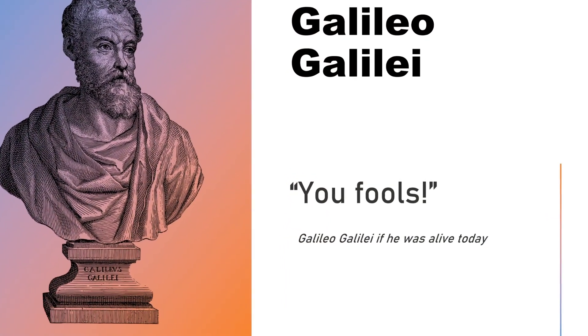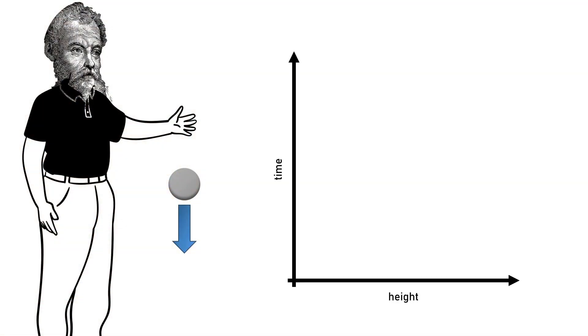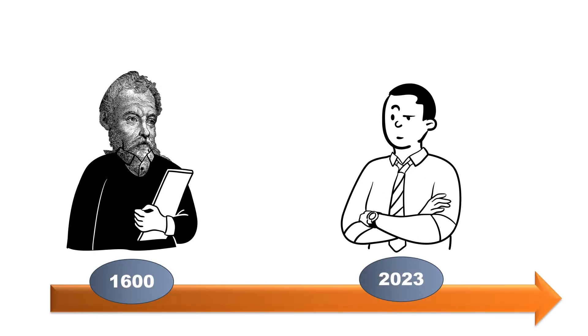And that's also the reason why one of the greatest scientists of all time would probably laugh at us today, because that's no progress at all compared to how he did experiments. When Galilei conducted his experiments testing how long it takes for a ball to fall to the ground from different heights, he used the same experimental design principle — but 500 years ago he was basically limited to a feather, a piece of paper, and his brain.